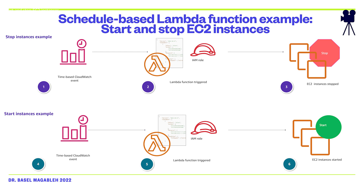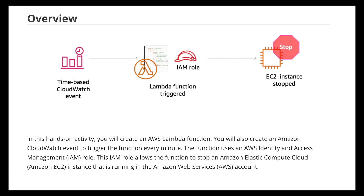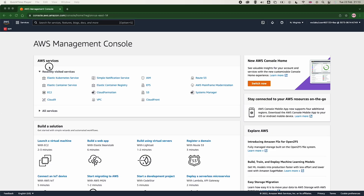A CloudWatch Event is scheduled to run a Lambda function to stop your EC2 instance at, for example, 22:00 GMT (midnight). The Lambda function is triggered and runs with an IAM role that gives the function permission to stop the EC2 instances, which then enter the stopped state. Later, at 5:00 AM GMT, a CloudWatch Event is scheduled to run a Lambda function to start the EC2 instances, which then enter the running state.